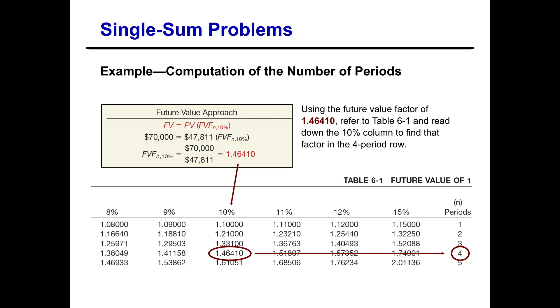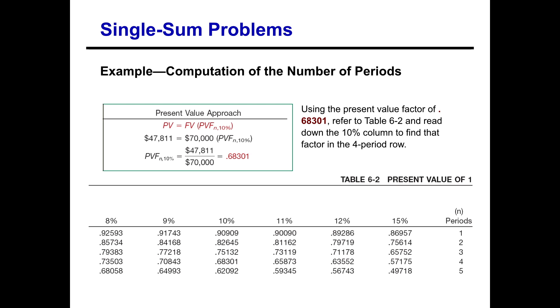We can also use what's called the present value approach. This is setting the present value equal to the future value times the present value factor at a certain number of periods and 10%. So again, that's our unknown, that present value factor amount. So we want to get that on one side of the equation by itself. So dividing both sides by the $70,000 gets us a present value factor of 0.68301. So we know it's 10% interest. So we go to our 10% column in our table and we scan down until we find that factor.